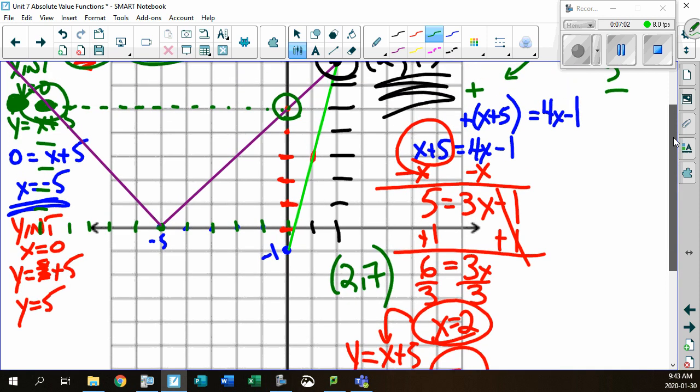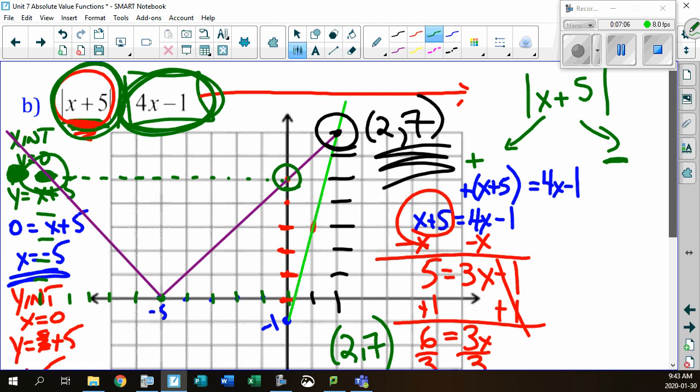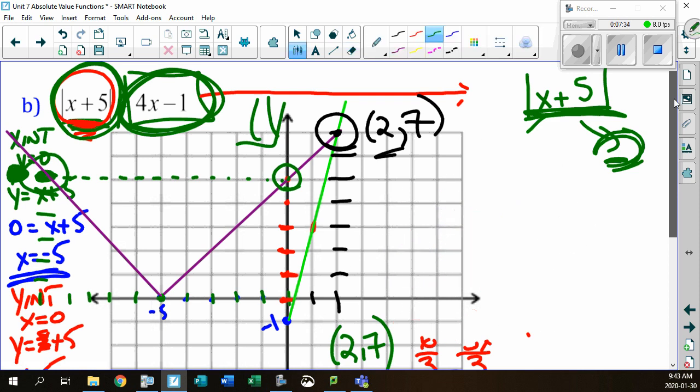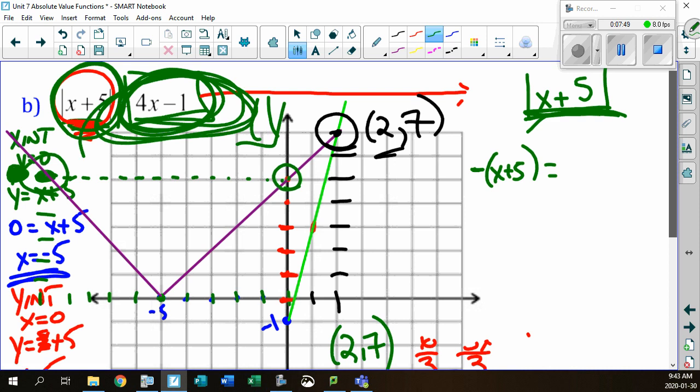But wait a second. I also said, don't forget, you have to look at the negative version of this, just in case there's another intercept. Well, we can see graphically right here, there is no other intercept. There is just the one intercept. But we have to do the algebra. We have to show the algebra and see what that's all about. So, there's our minus. I'm going to take the minus version of this entire formula. The minus version of x plus 5. We looked at the positive version. Now, we have to look at the minus version. And don't forget what this guy actually equaled to. That has to equal to the 4x minus 1.